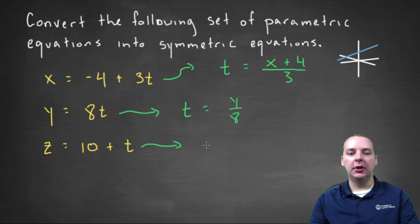And in the last equation, you would get t equals z minus ten. We'll subtract that ten over to the left-hand side.